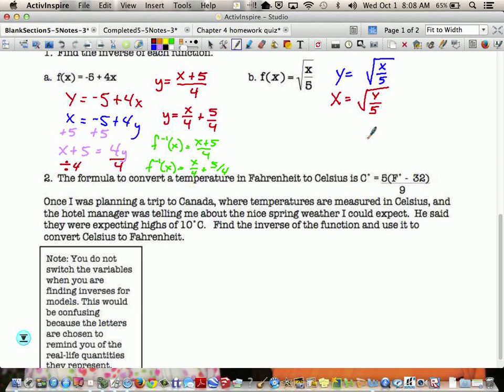And now we're ready to solve for y. So what's the first thing we do here? Square both sides. And I get x squared is equal to y over 5. Right now, my y is being divided by 5, so we're going to multiply both sides by 5. And I get y equals 5x squared. So f inverse of x is 5x squared.